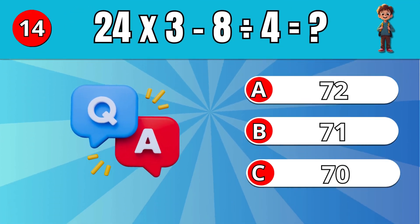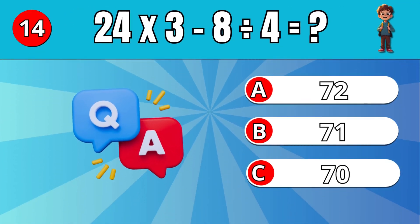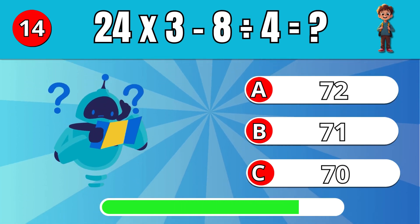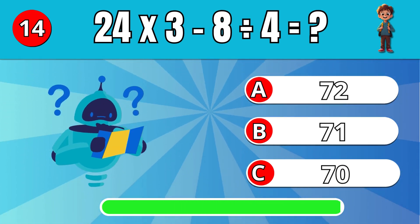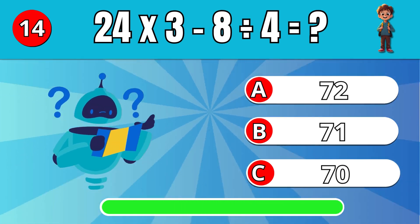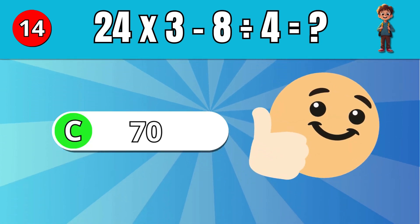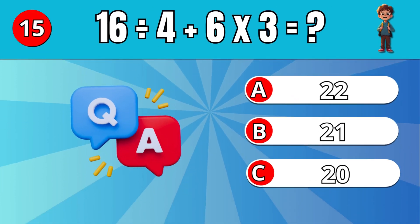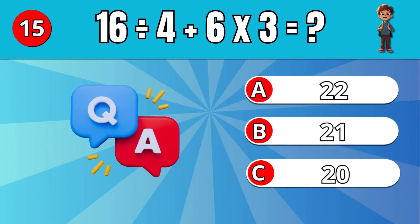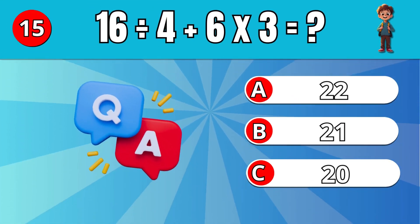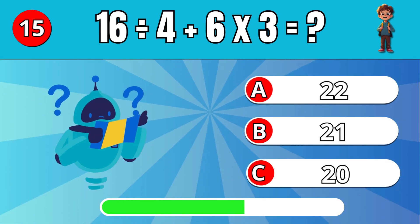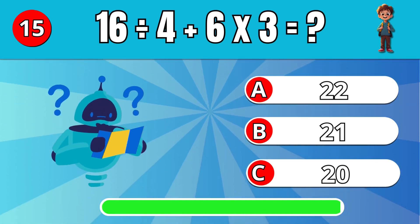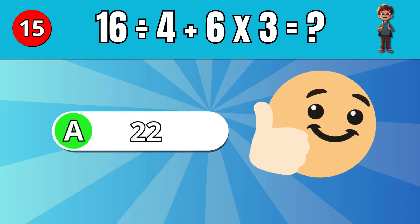What is 24 times 3 minus 8 divided by 4? C: 70. What is 16 divided by 4 plus 6 times 3? A: 22.